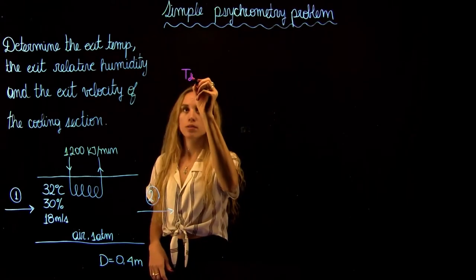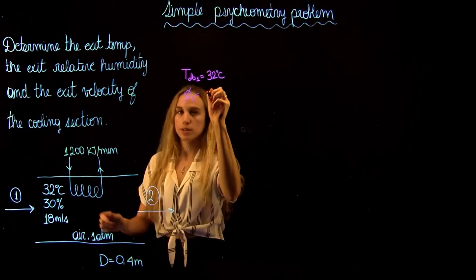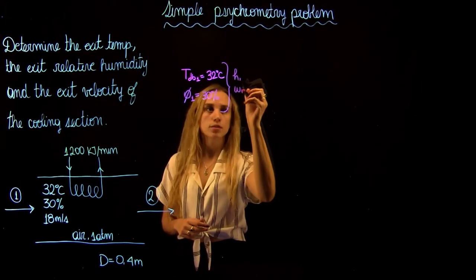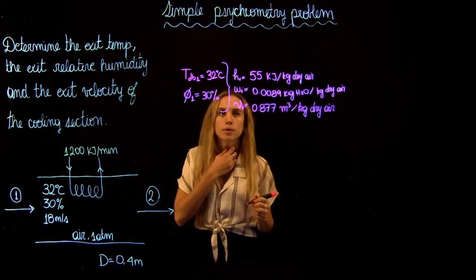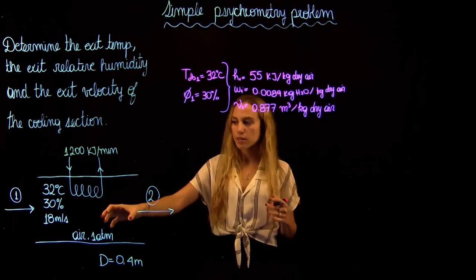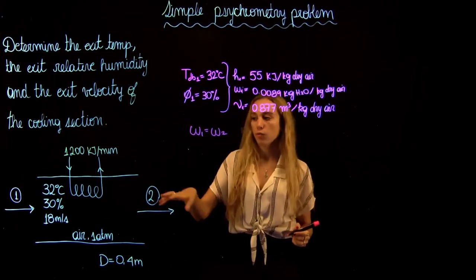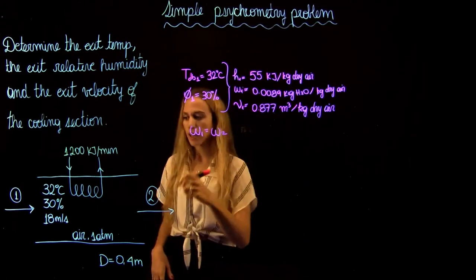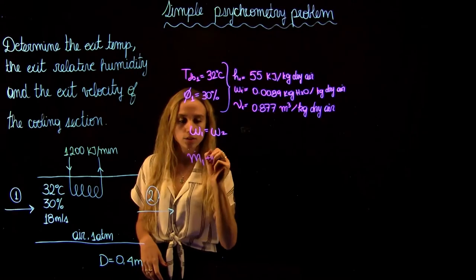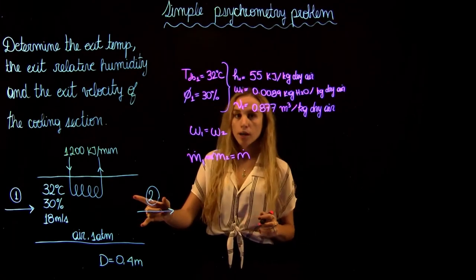We are given the dry bulb temperature at state 1 equal to 32 degrees Celsius, and the relative humidity at state 1 equal to 30%. With just these two values, we can find the enthalpy at state 1, the absolute humidity, and the specific volume. Importantly, the absolute humidity won't change because we have no humidifying or dehumidifying system, so it remains the same at state 2. We also assume potential and kinetic energy are negligible and that mass flow is constant between states 1 and 2.